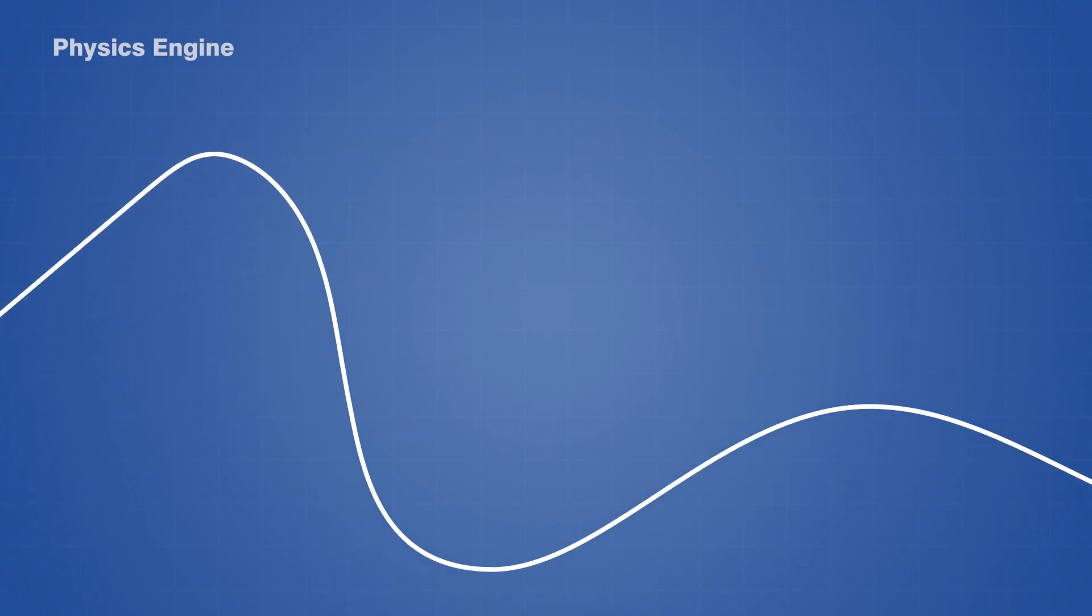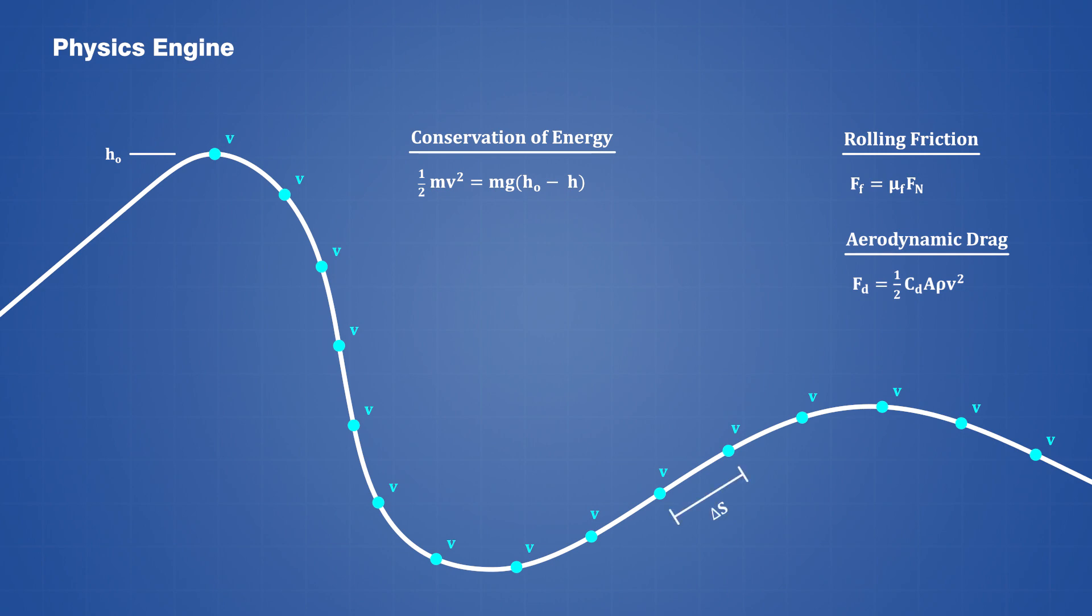The physics engine itself is basically just an algorithm that traverses along a given spline, and it uses the law of conservation of energy to compute the rollercoaster's velocity at every node. In order to account for losses, it calculates the amount of work done by rolling friction and aerodynamic drag along each track segment, and it subtracts these values from the total energy.